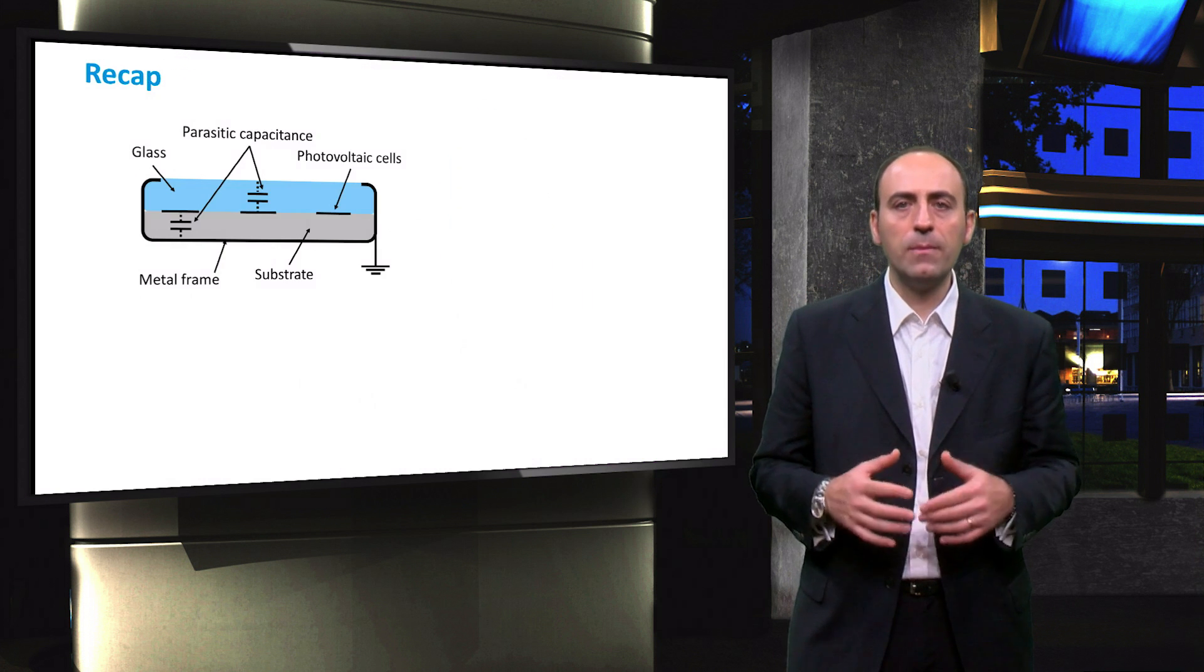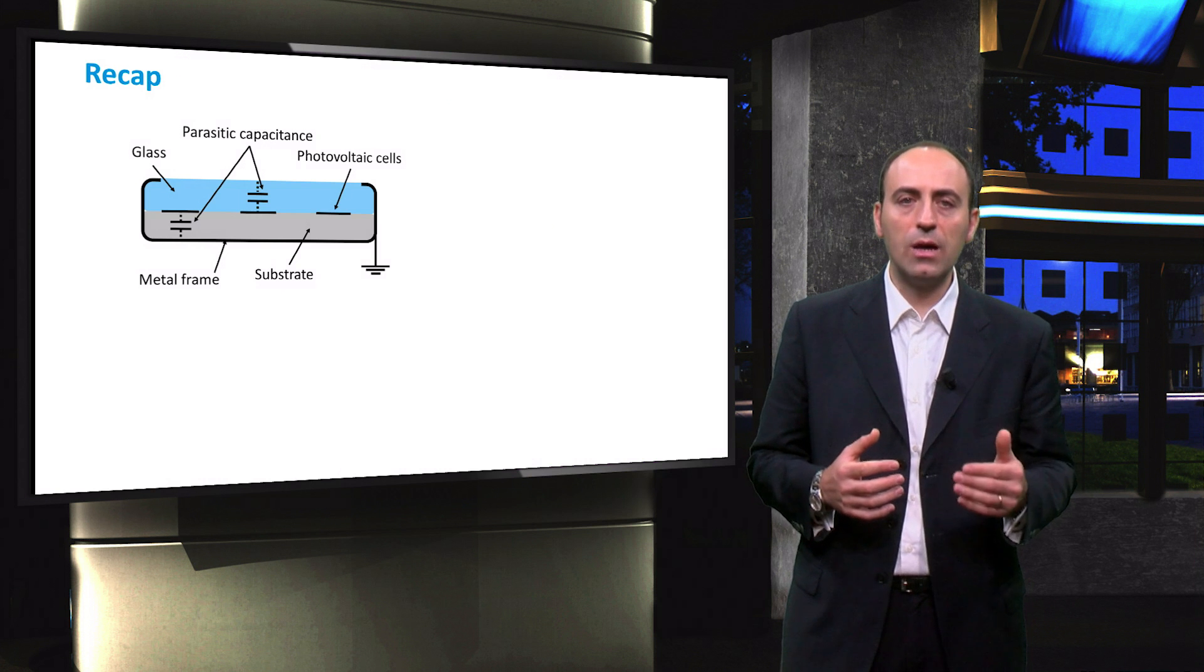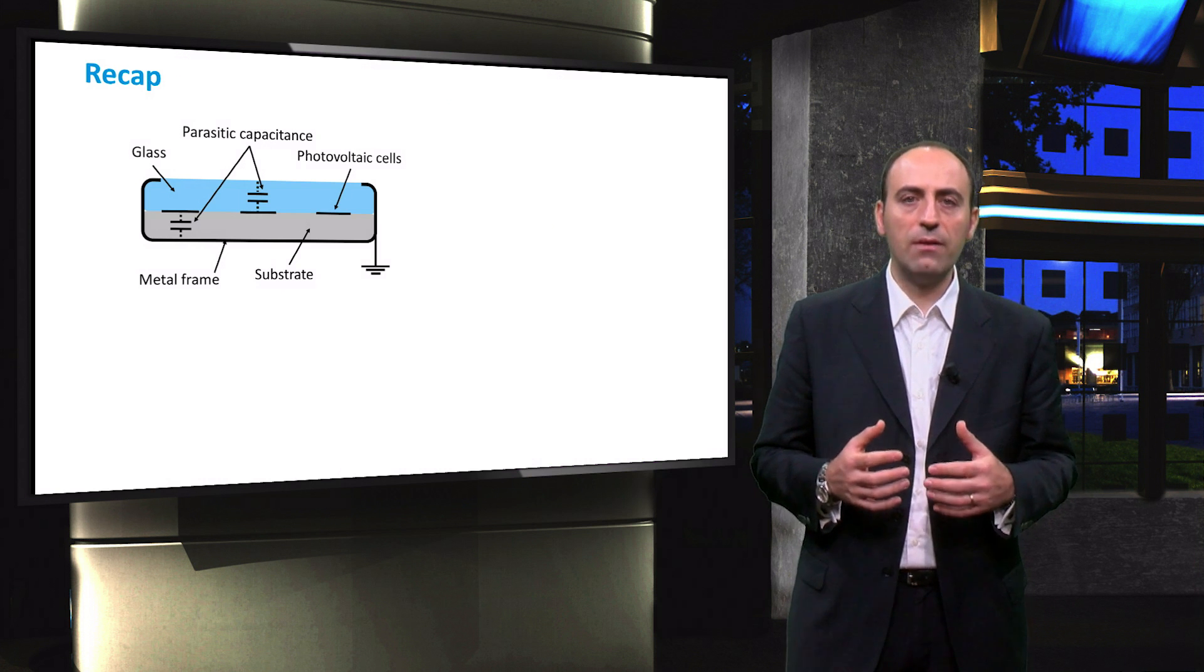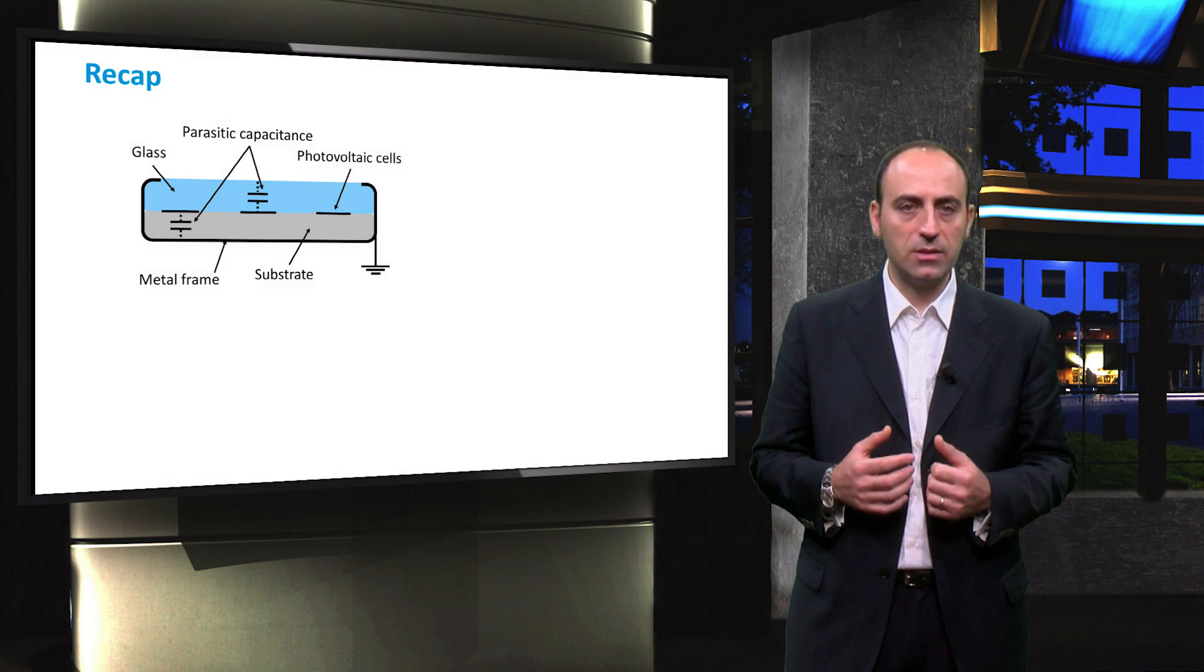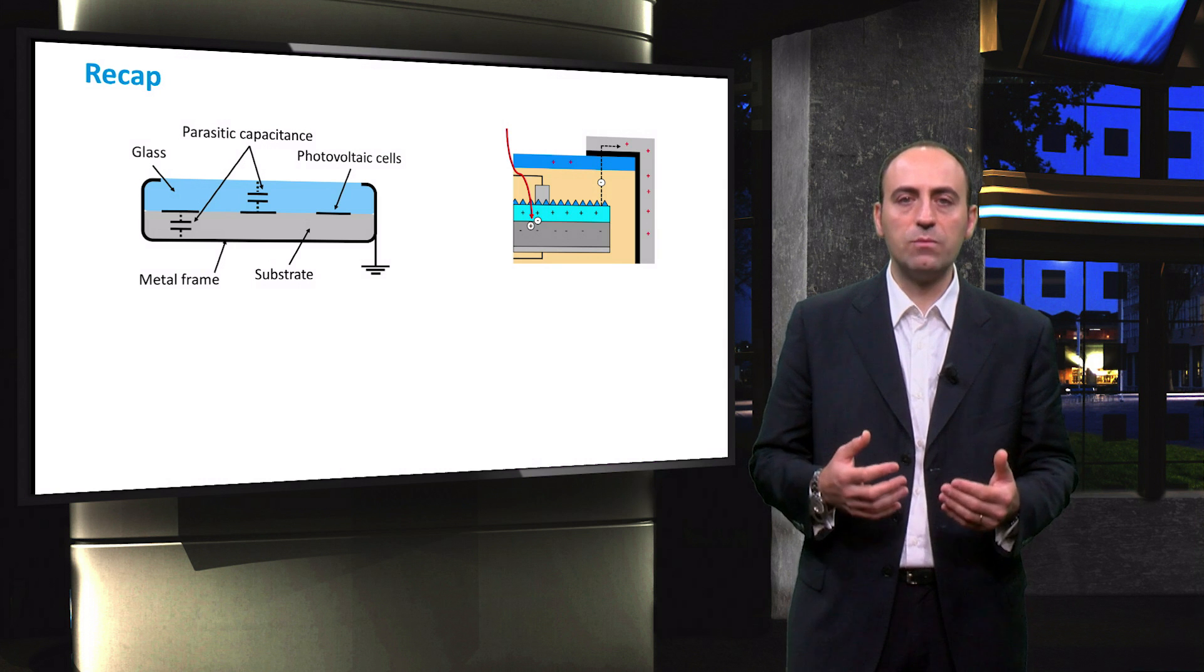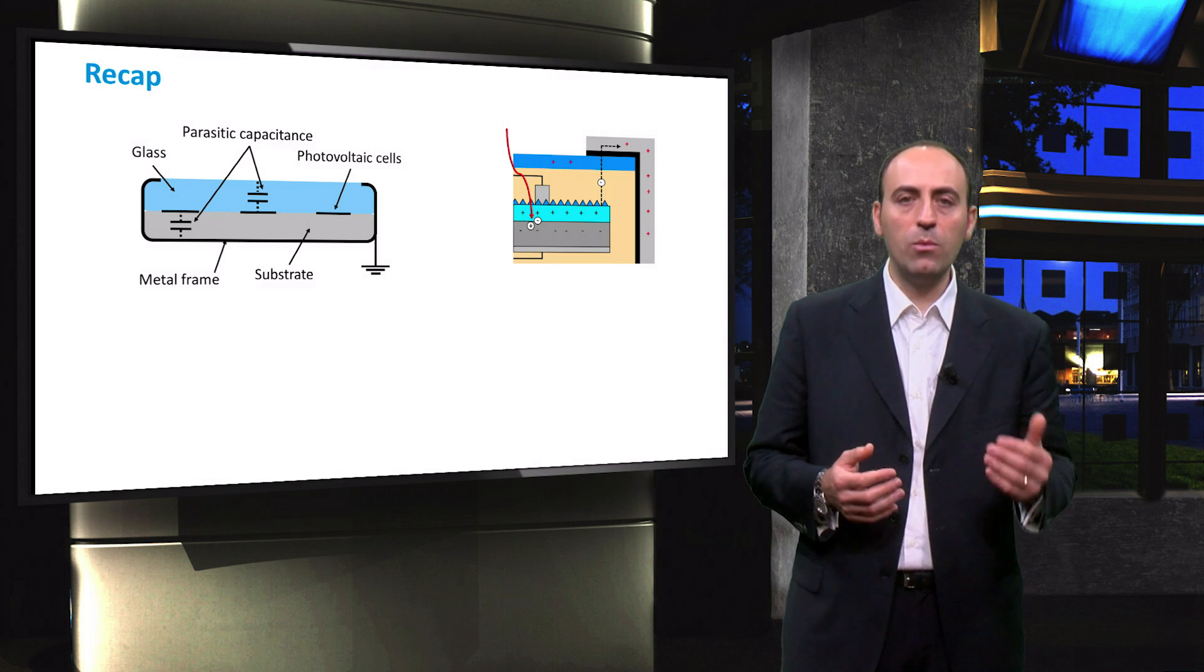To sum up, in this video we saw some issues related to grounding of PV systems. Leakage currents derive from the parasitic capacitance in the module. Potential induced degradation is given by the high potential difference between the module and the frame which is grounded.